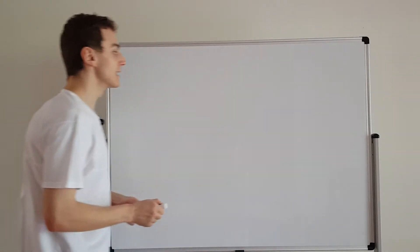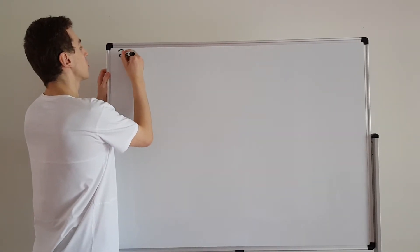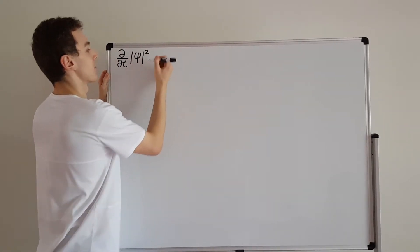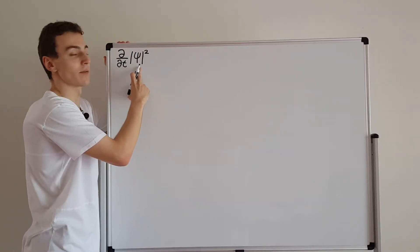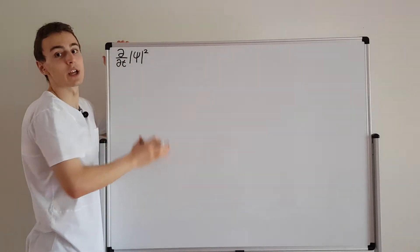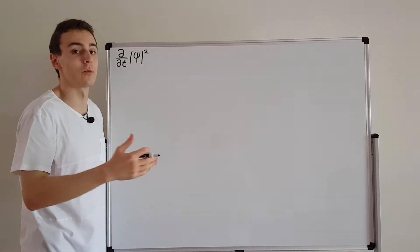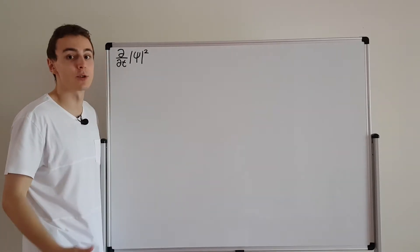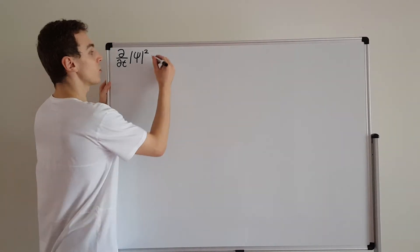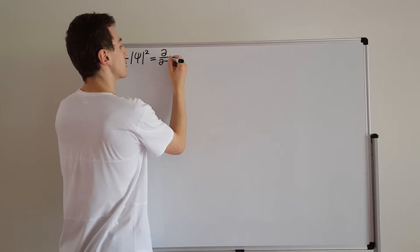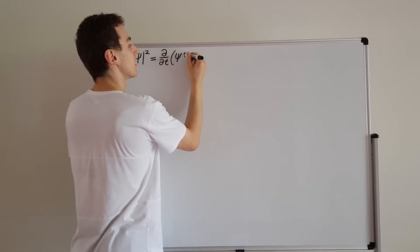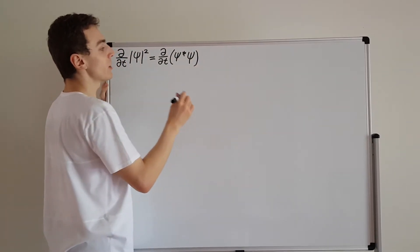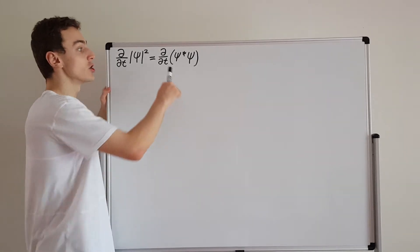What I want to look at today is the partial derivative with respect to time of the square amplitude of the wave function. We can interpret this as the probability density function, and I want to find an expression for it that we can use in later derivations. We can repackage this as the partial derivative with respect to time of psi star times psi — the complex conjugate of the wave function times the wave function itself. We can use the product rule of differentiation to unpack all of this.